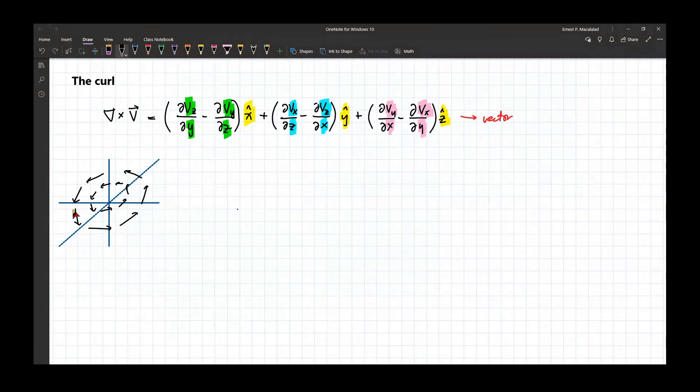And the direction of the curling, using your right-hand rule, the direction of the curl is perpendicular to the curling of your vector field. So when you hear the word curl, something rotates. It can be the vector field itself that rotates,